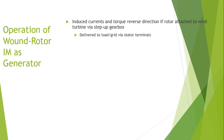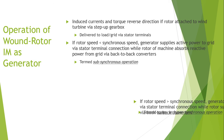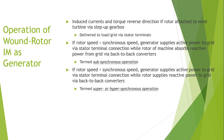Power is delivered to the load via the stator terminal through a step-up gearbox. If the rotor speed is less than the synchronous speed — sub-synchronous operation — the generator supplies active power to the grid via the stator terminal while the rotor absorbs reactive power from the grid via back-to-back converters. If the rotor speed is greater than the synchronous speed — super or hyper-synchronous operation — the generator supplies active power via the stator terminal while the rotor supplies reactive power to the grid via back-to-back converters.